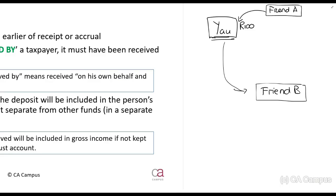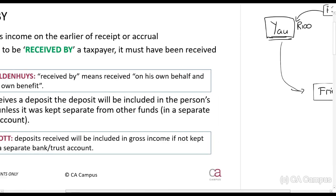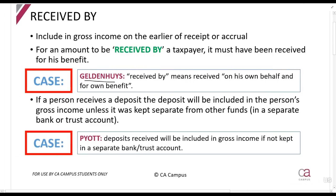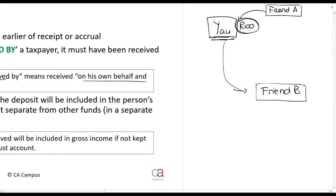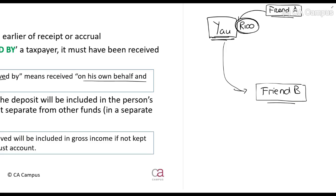And then when you pay it to Friend B, you have to consider if it's a deduction or something like that. Obviously, something hasn't happened here — why doesn't it? Let's see what 'received by' means. There was a court case — the Geldenhuis case — that said 'received by' means you received it on your own behalf and for your own benefit. So when you received that 100 rands, did you receive it for your own benefit? No. You received it from Friend A just to give to Friend B. It's Friend B's money. You didn't get any benefit from it, so you have not received it in terms of the gross income definition.